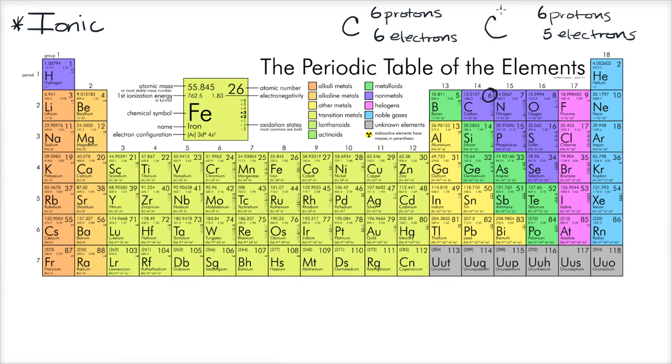So this will be carbon with, you could write it as a one plus charge like that. Or you could even write it like this. And this you would just view as a carbon atom. This you would now call an ion because it has that net charge. It has a different number of protons and electrons.